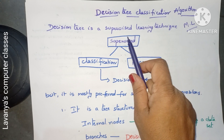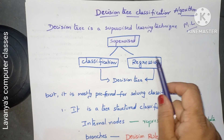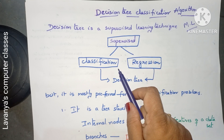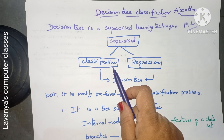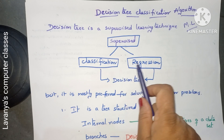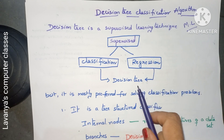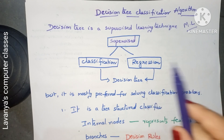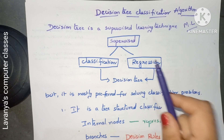Decision tree is an example of a supervised learning technique. Within supervised learning there are two different types: classification algorithms and regression algorithms. Both belong to supervised learning, and decision tree is an example of both classification and regression techniques.